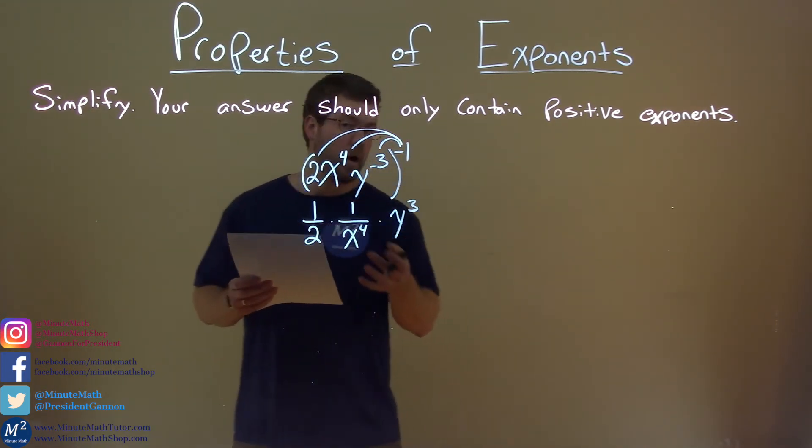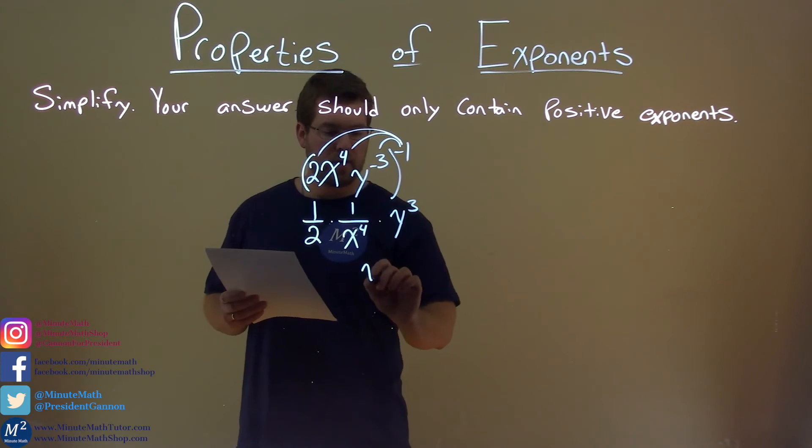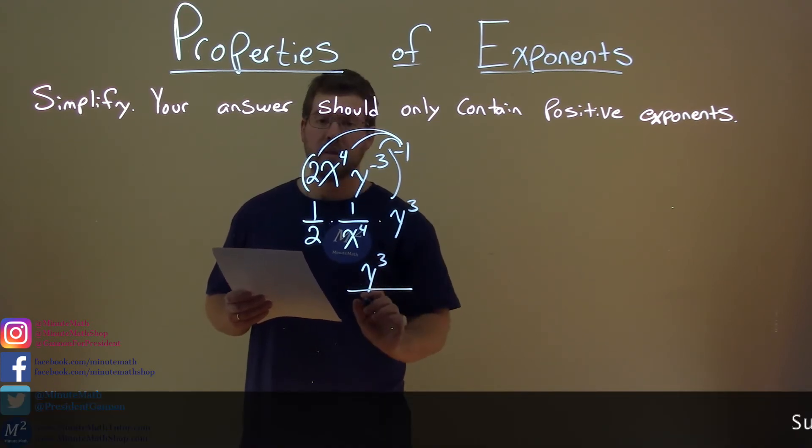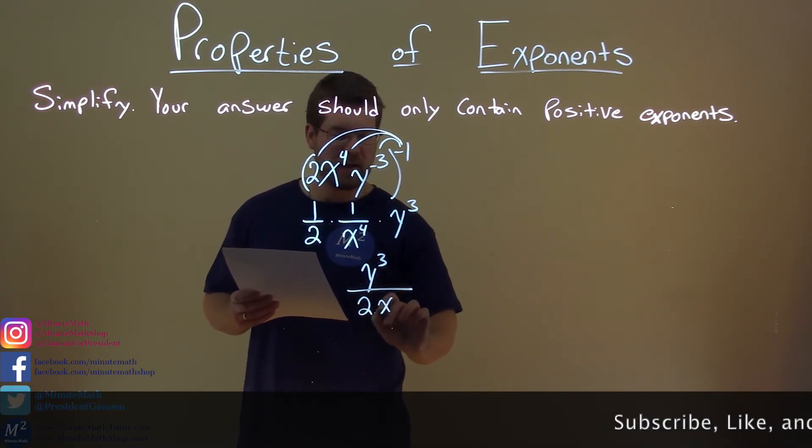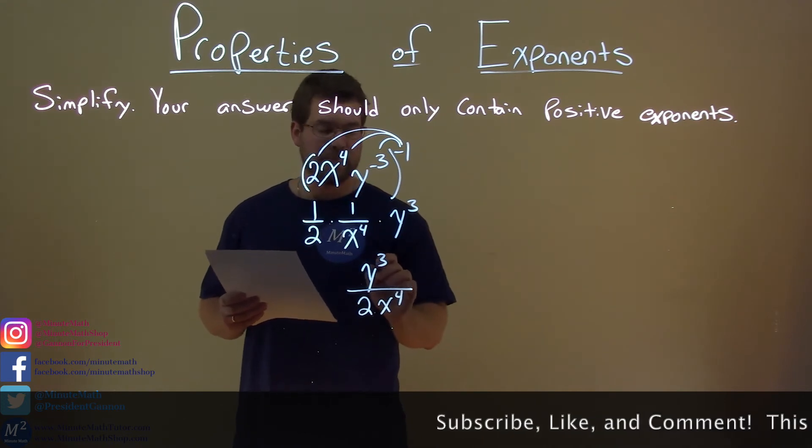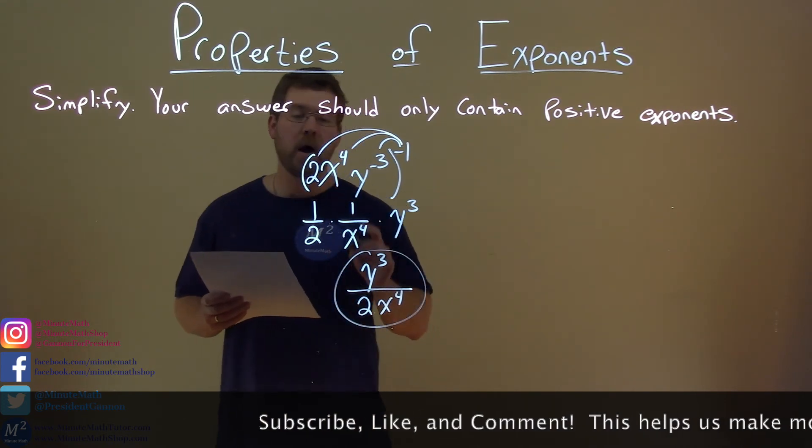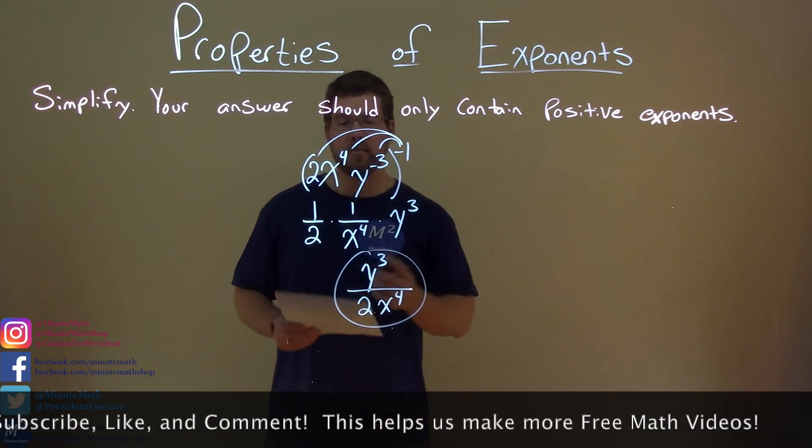We now can combine this to be one big fraction. y to the 3rd stays in the numerator, and the denominators are 2x to the 4th. That's it. We have our final answer, y to the 3rd over 2x to the 4th power.